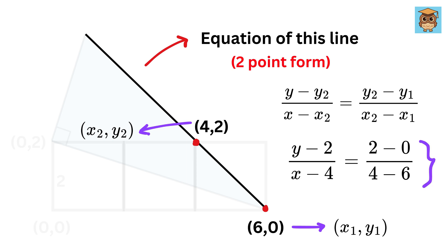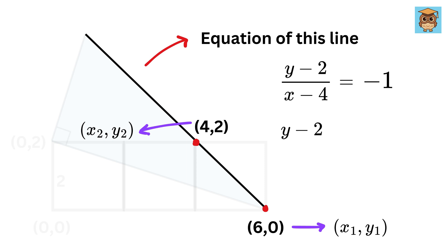So y minus two equals minus one times x minus four, which will become four minus x. So y will be four minus x plus two, or six minus x. Amazing.